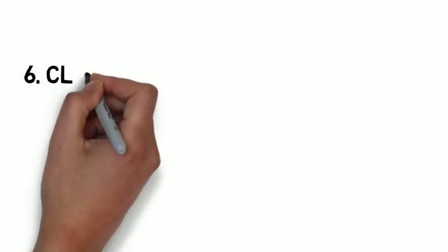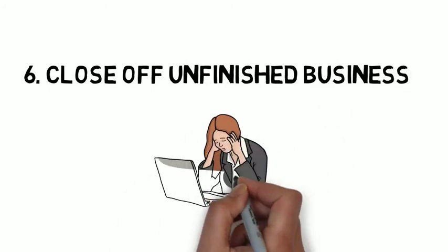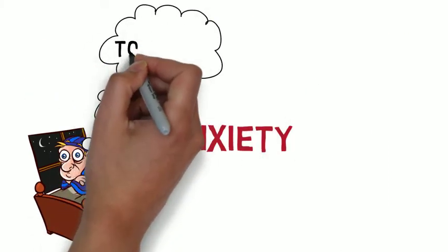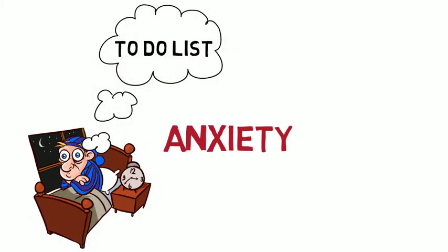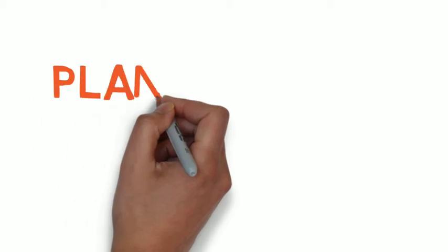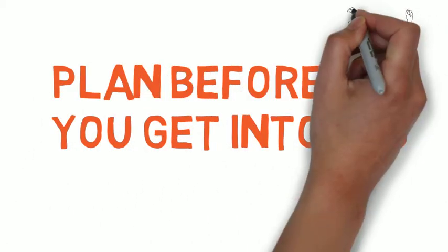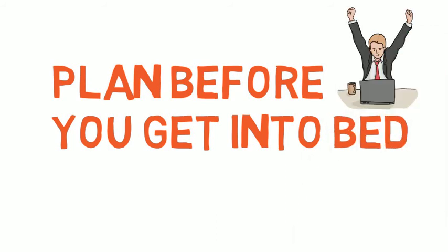Number six, take time to close off any unfinished business before you get into bed. Anxiety is a major reason we toss and turn. So if you haven't completed certain tasks that you wanted to do that day, develop a plan in your mind on how you're going to tackle it tomorrow. If you have a plan set in place, you won't need to wrestle with the problem in bed.